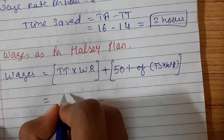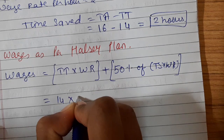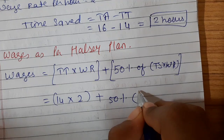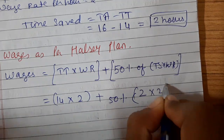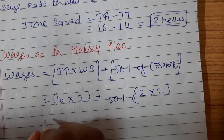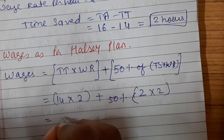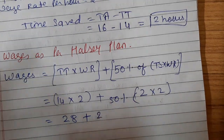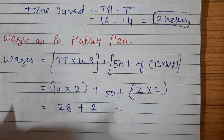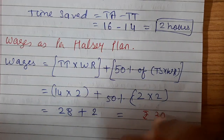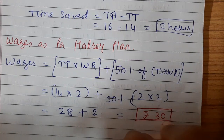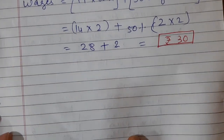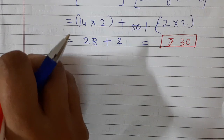Time taken is 14 hours into wage rate rupees 2, plus 50% of time saved — 2 hours — into wage rate 2. That gives 28 plus 50% of 2, which is 1. So wages as per Halsey plan is rupees 30.